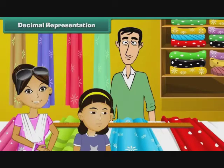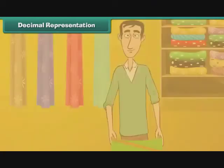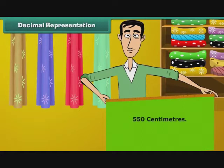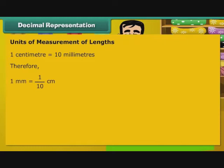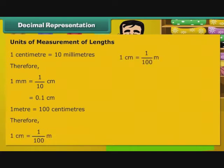Bela accompanies her mother to a saree shop. She asks the shopkeeper the actual length of a saree. The shopkeeper measures it as 550 cm. Bela wants to know if 550 cm can be expressed as metres. To answer Bela's question, let us understand the relationship between different measures of length. 1 cm is equal to 10 mm. Therefore, 1 mm is equal to 1 by 10 cm, that is equal to 0.1 cm. 1 m is equal to 100 cm. Therefore, 1 cm is equal to 1 by 100 m, that is equal to 0.01 m.